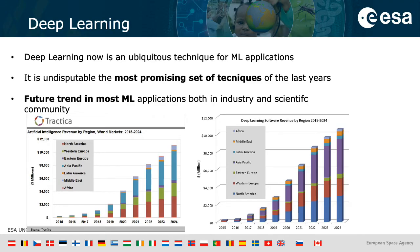Deep learning nowadays is an ubiquitous technique in many machine learning applications. It has been appointed as one of the most promising state-of-the-art techniques of the last five years, and almost all future trends in machine learning agree that deep learning is the disruptive technique for new applications. Looking at the histograms, almost 90% of expected revenues from all artificial intelligence fields comes from deep learning applications.